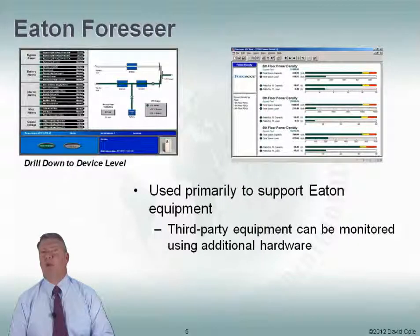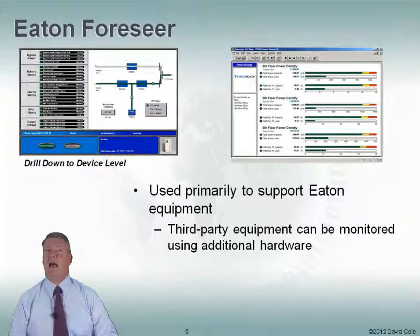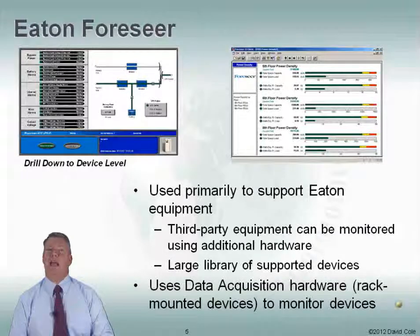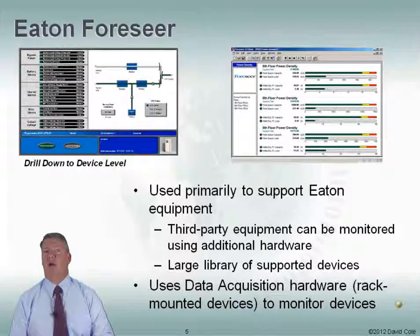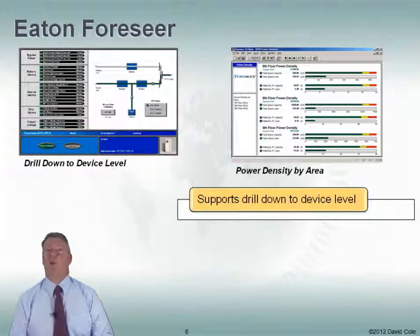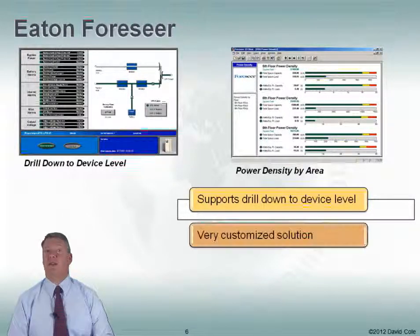Eaton Foreseer is used primarily to support Eaton equipment — they do a very good job of that — but they can also support some third-party equipment using additional hardware. They have a very large library of supported devices, so a lot of devices will work out of the box. They use data acquisition hardware — rack-mounted devices — to monitor the devices in the data center. It does support drill-down to the device level, so you can drill down to a particular device and get more information about it.